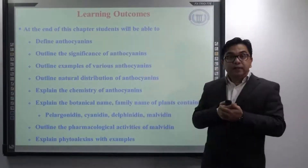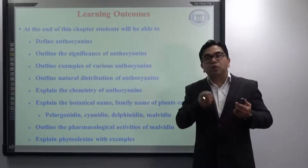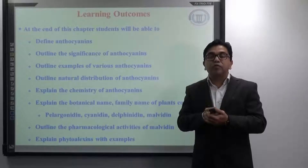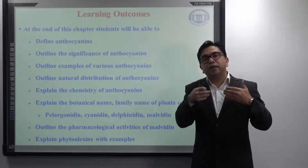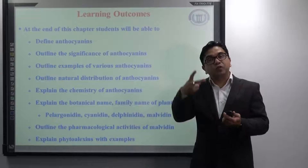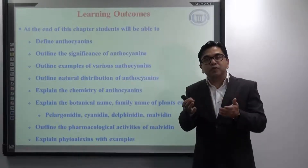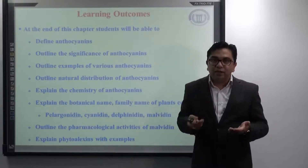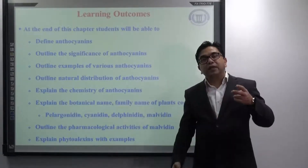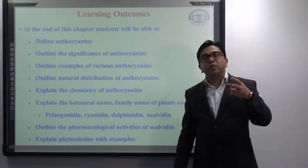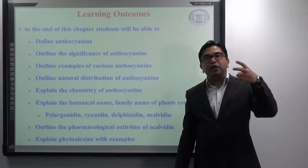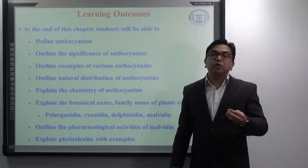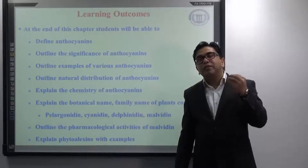Anthocyanin and anthocyanidin both play an important role in the food industry because they are highly used in the food industry for two purposes: first, to improve the appearance of food by providing different colours, and second, they are highly beneficial to human health. Because of these two reasons they are heavily explored and used in the food industry.